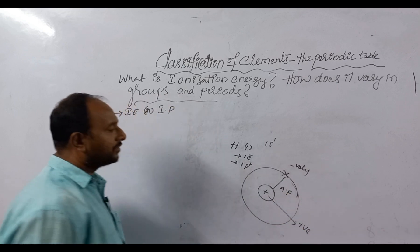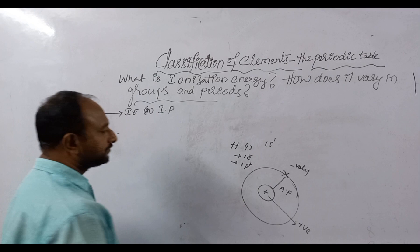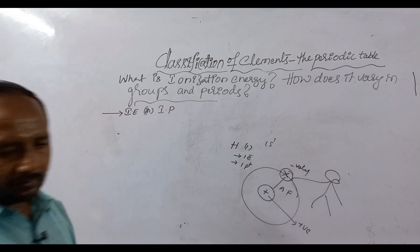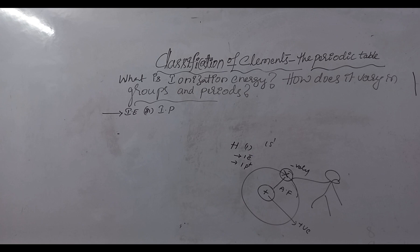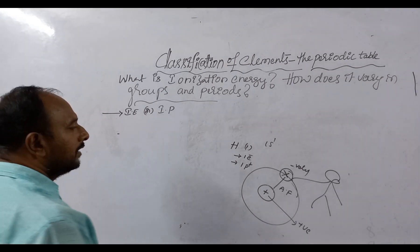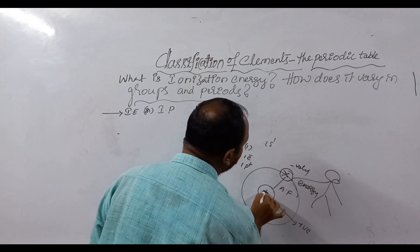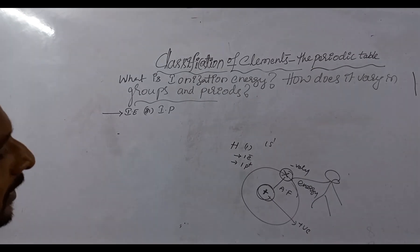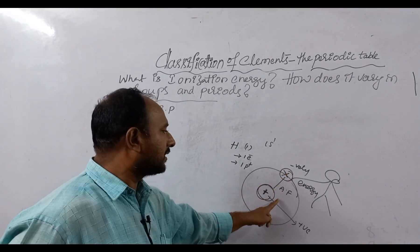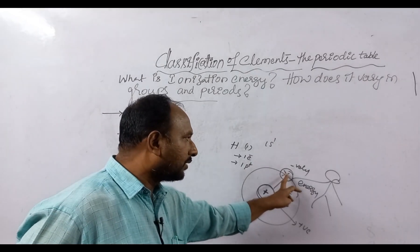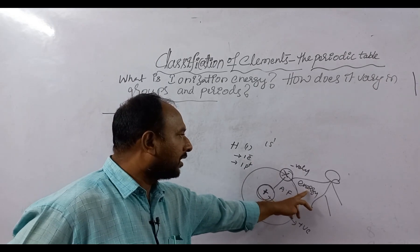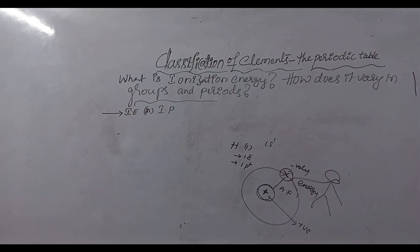Between them, an attractive force is there. The nucleus is attracting the electron towards itself. Now, we are going to remove this electron from the outermost shell. We want to remove the electron from the outermost shell of hydrogen, that is 1s. For this, we should need some energy — energy that is more than the energy with which the nucleus is pulling the electron towards itself.